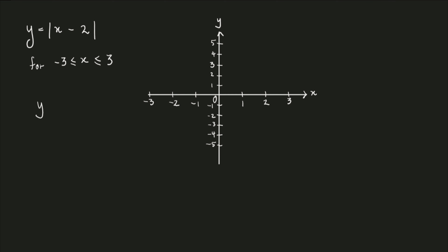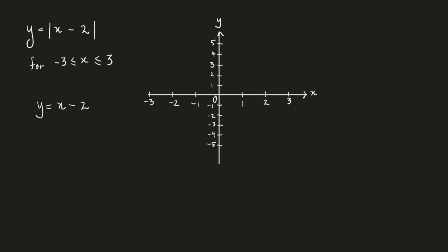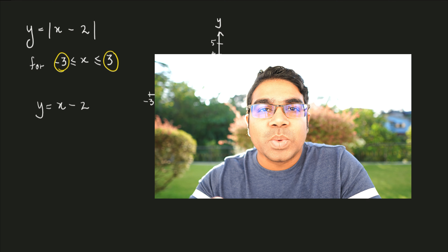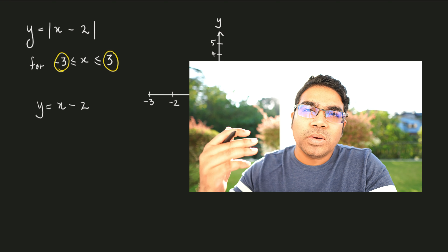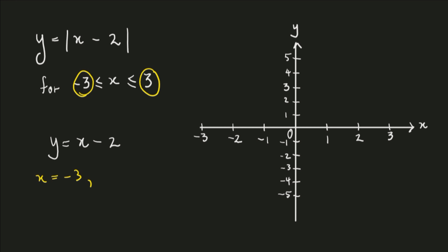So let's draw Y equals X minus 2. They've given us the domain, which is from negative 3 to 3. Y equals X minus 2 is a linear equation, so this would be a straight line. To draw a straight line, all we need are two points. We use the domain values: when X equals negative 3, Y equals negative 3 minus 2, which is negative 5. So we've obtained one point: negative 3, negative 5.